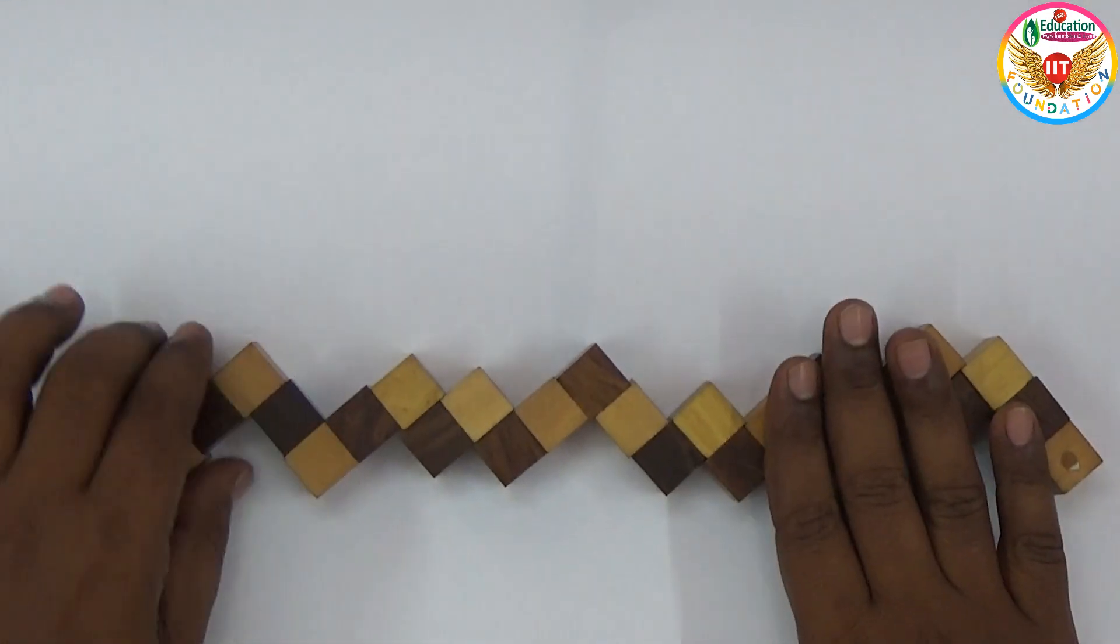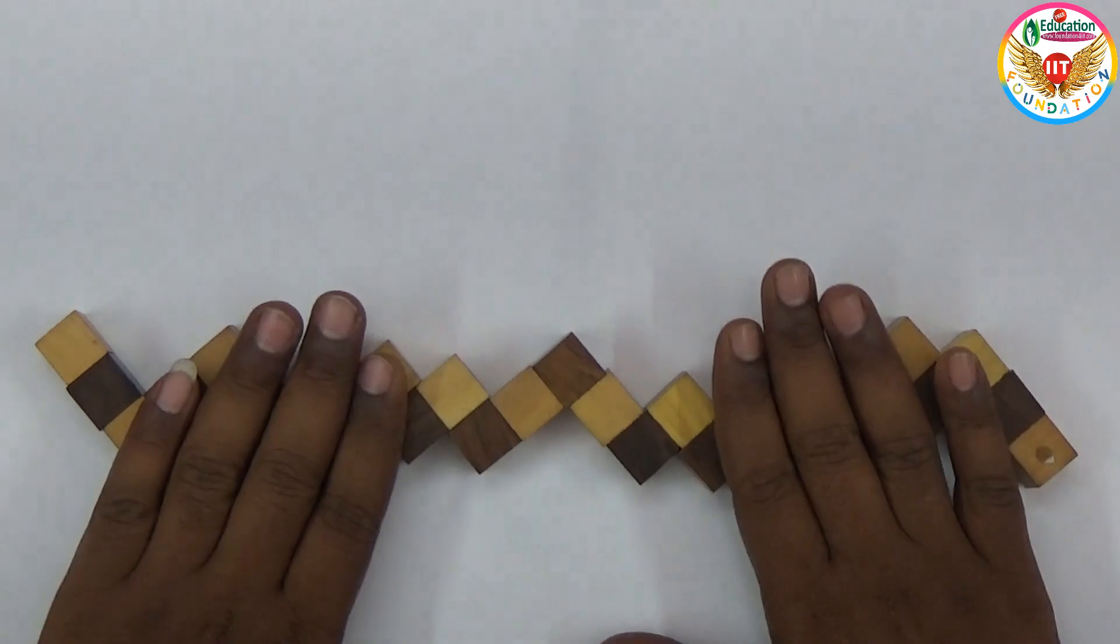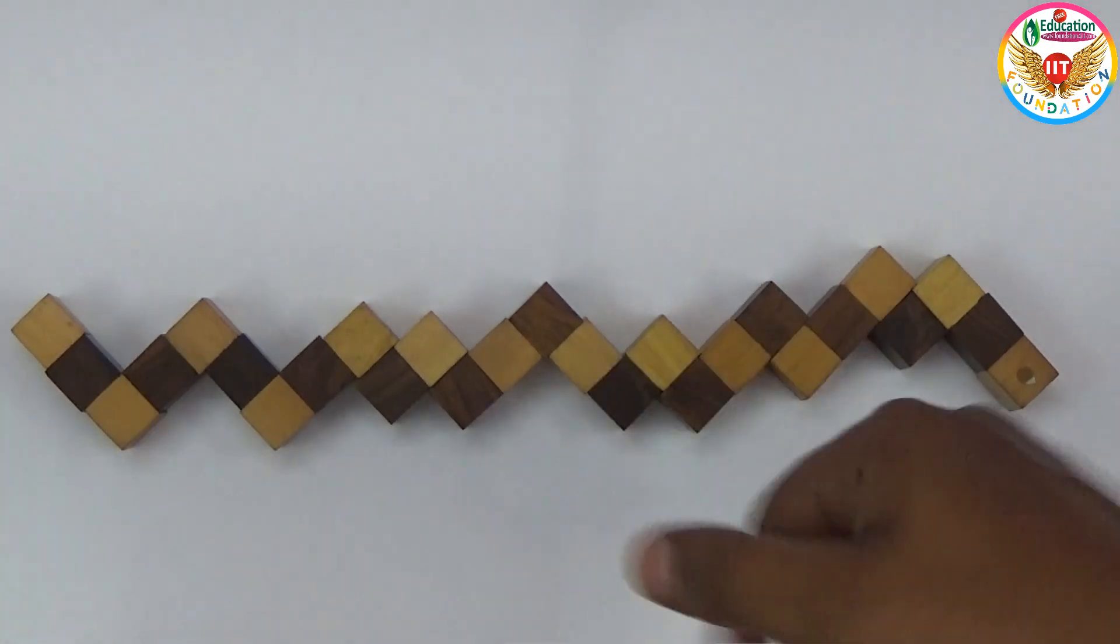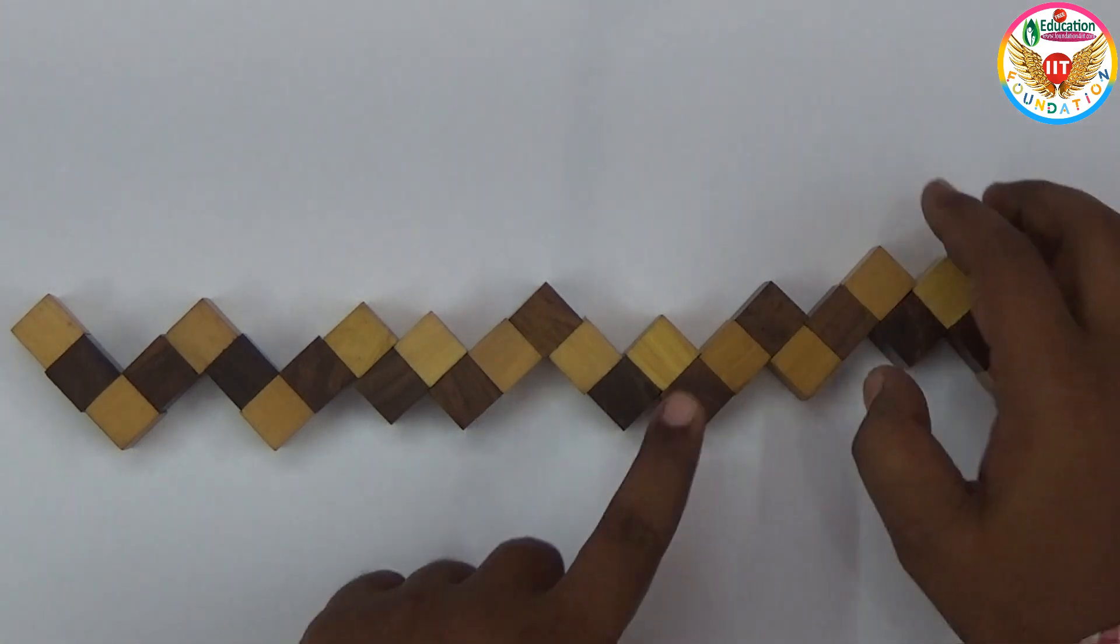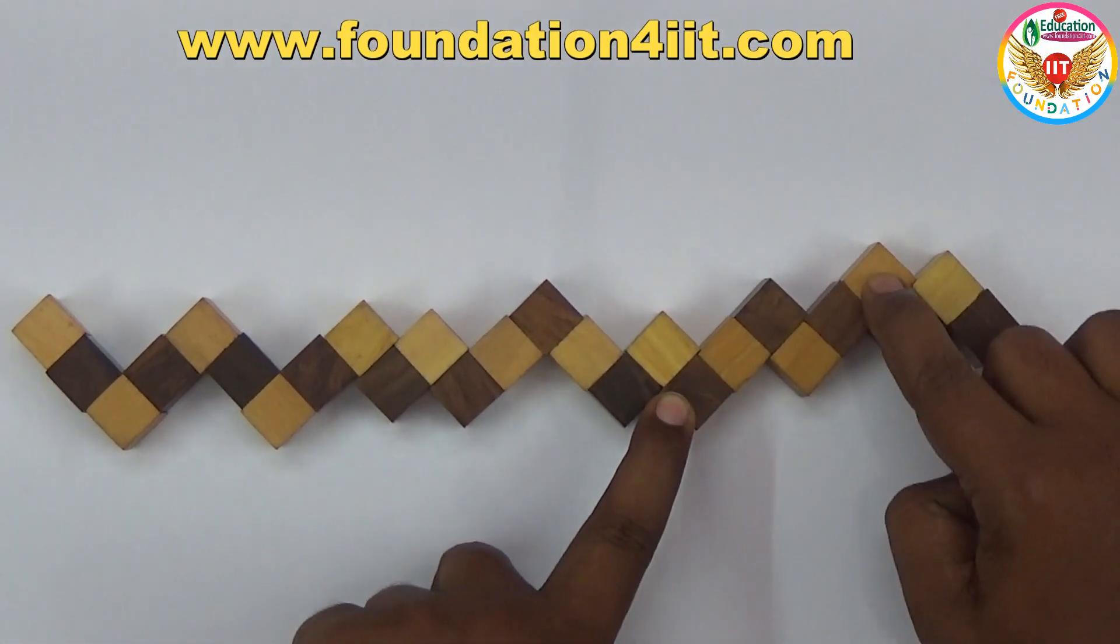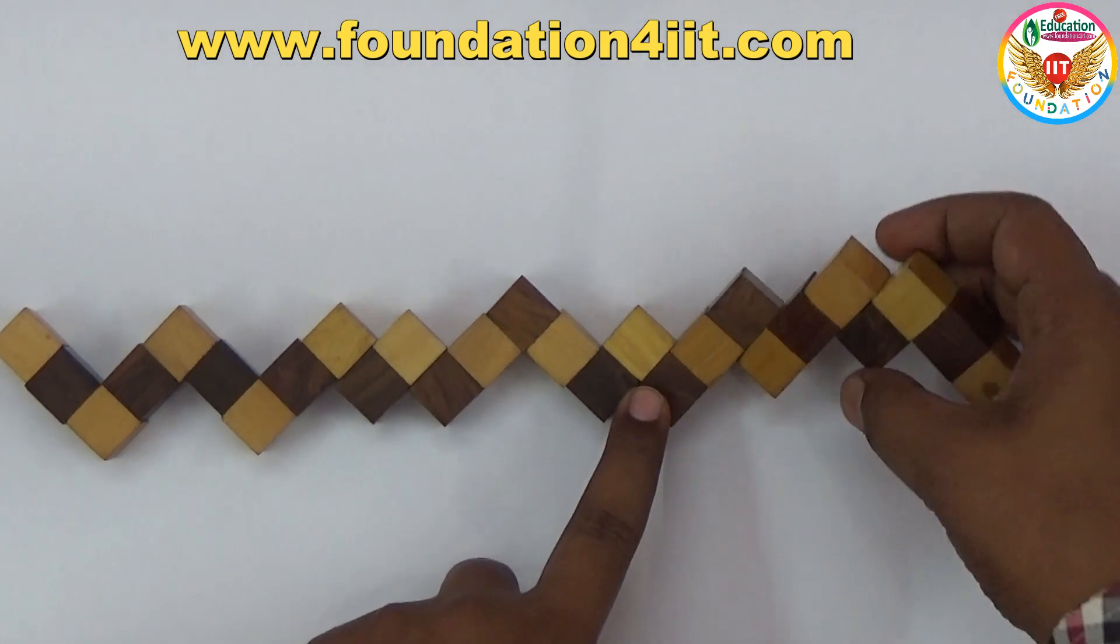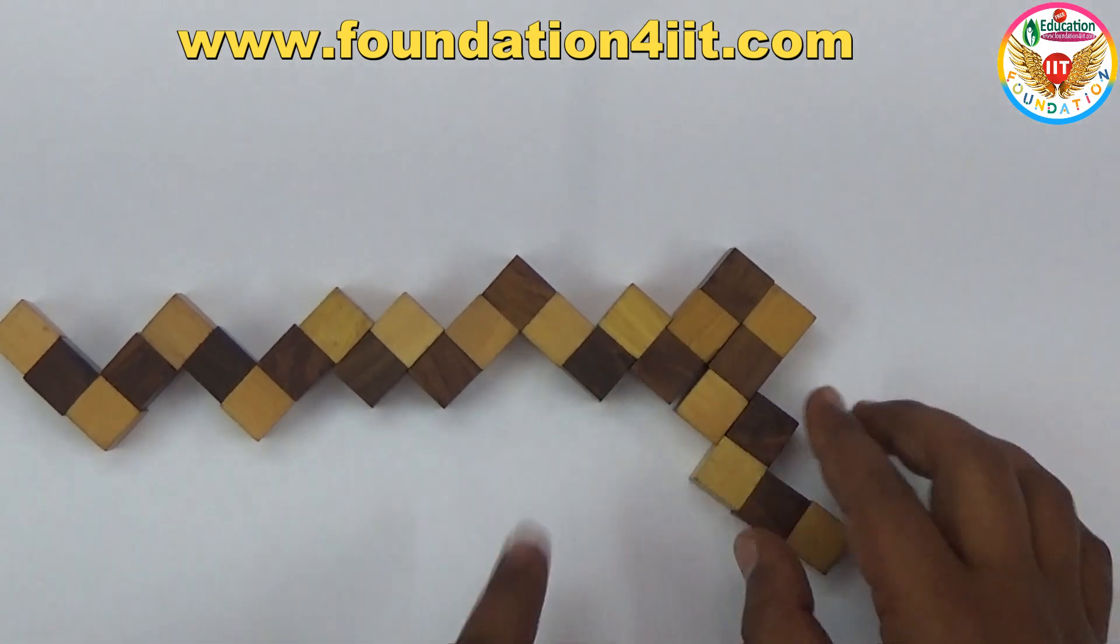So which is possible, in that way you can adjust. To solve this, the first four steps are important. Then the remaining are very simple - there is only logic behind this. Here 3, 3 are there. These three, you can interchange. You can rotate first this part and keep it in this way.